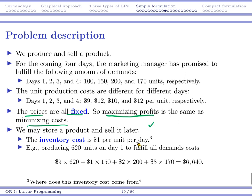So now let's consider inventory. We may store a product and sell it later. And if we pay $1 per unit per day, we will be able to do that. So that $1 per unit per day forms the inventory cost, or sometimes it's also called holding cost. Or some people call it inventory holding cost. But anyway, that's the cost you need to pay to carry one unit of product from today to tomorrow.